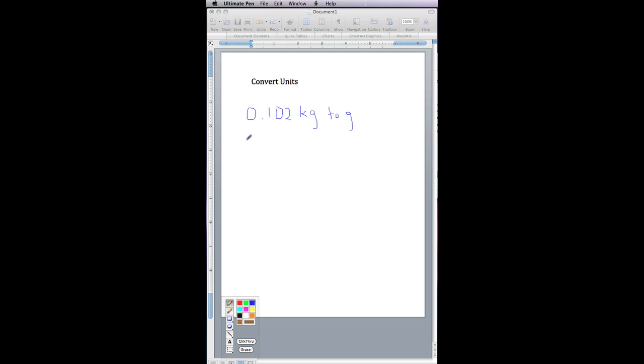Kilo means 1,000, so we know that 1 kilogram equals 1,000 grams. Write what's given, the 0.102 kilograms.